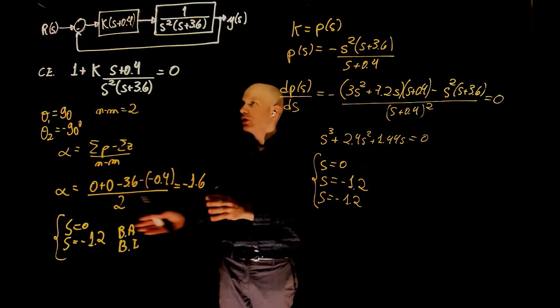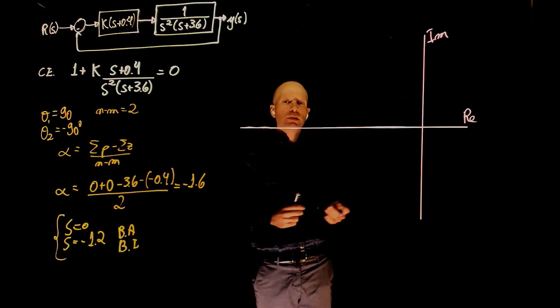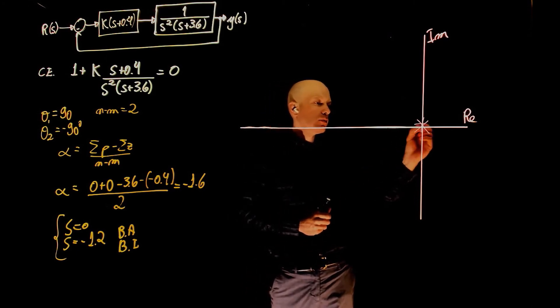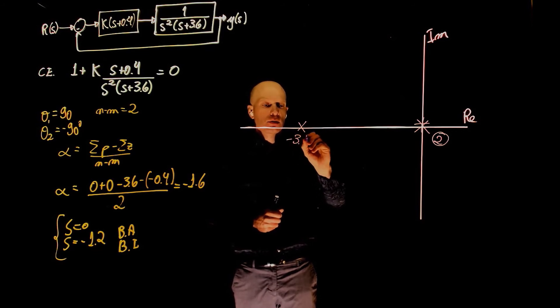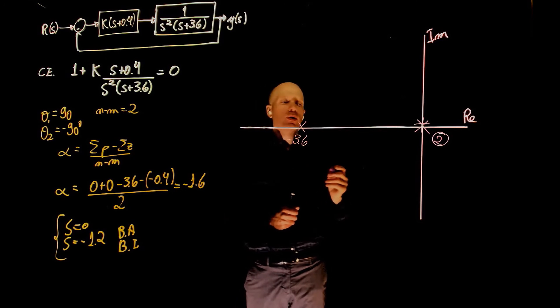Break away or break in points. Now that we have all the information about our system, we can proceed with the root locus. Now, let's place the poles and zeros in the s-plane. We have two poles at zero. We have one pole at negative 3.6. And we have one zero at negative 0.4.